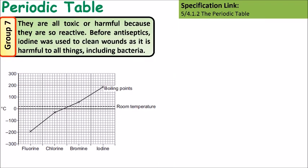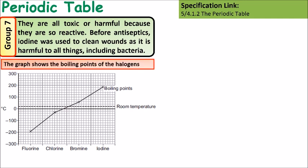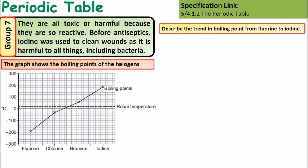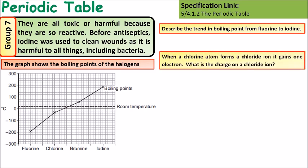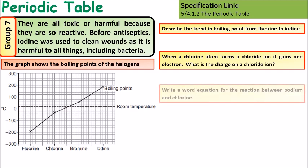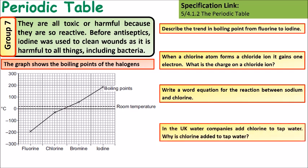In this question, group 7 elements are all toxic. They can all be used as antiseptics. There's a graph below showing the boiling points of different halogens. Describe the trend in the boiling point from fluorine to iodine. When a chlorine atom forms a chloride ion, it gains one electron. What charge does chloride ion have? What would the word equation be for the reaction between sodium and chlorine? Have a think, then have a look at the answers.